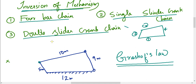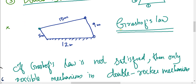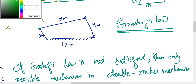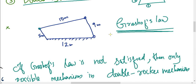In this 4-bar chain, for there to be continuous motion, the Grashof's condition must be satisfied. If the Grashof's condition is satisfied, we get continuous motion in the mechanism.